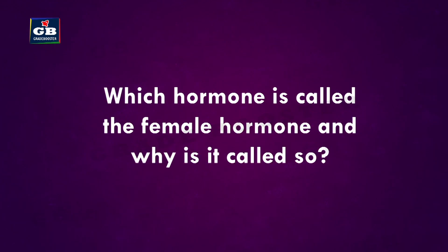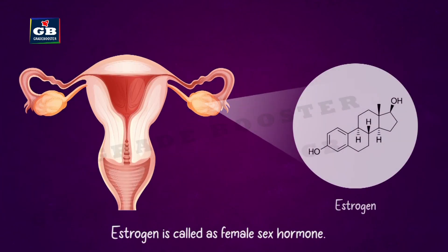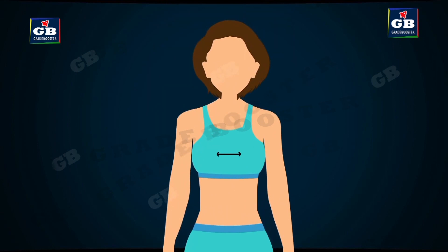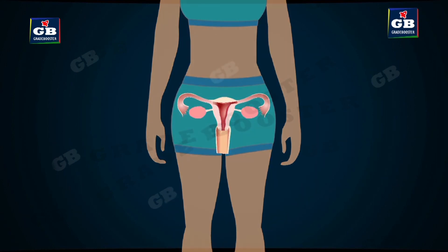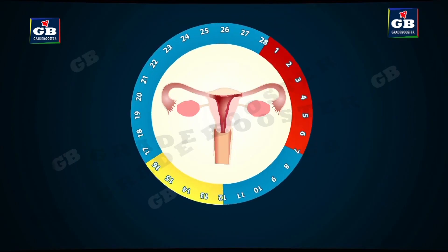Estrogen is called the female sex hormone because it helps in the development of secondary sexual characters in females, such as development of breasts, beginning of menstruation, and development of ovaries.